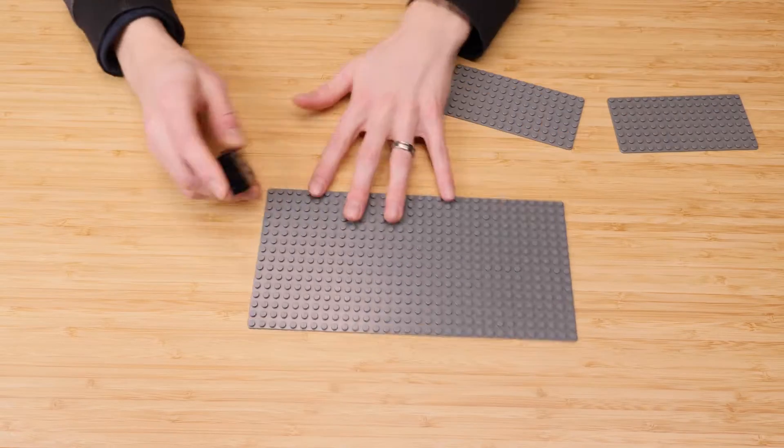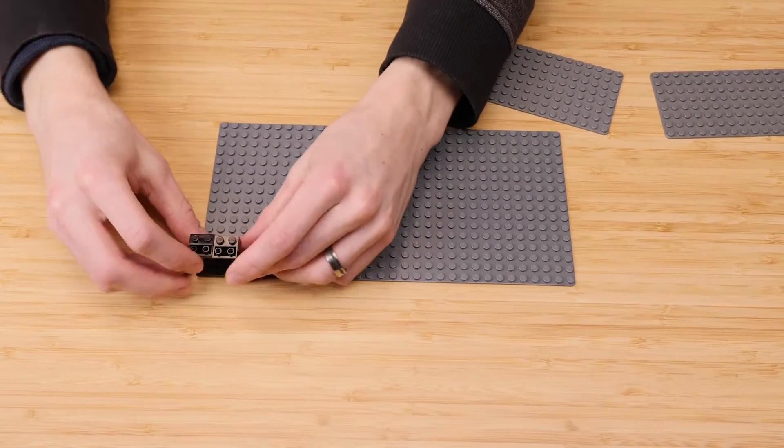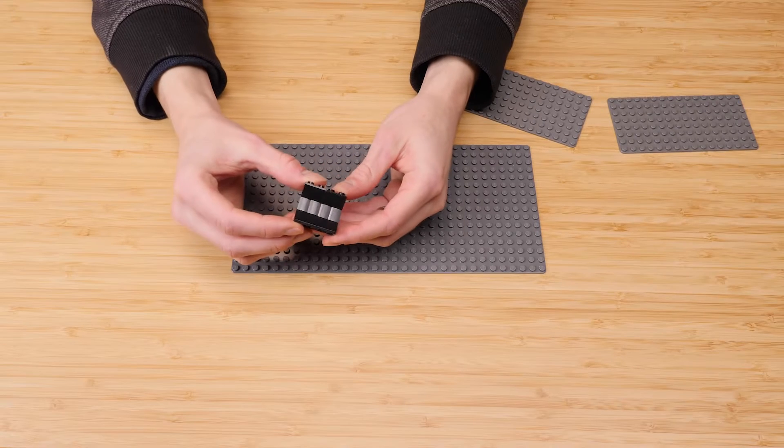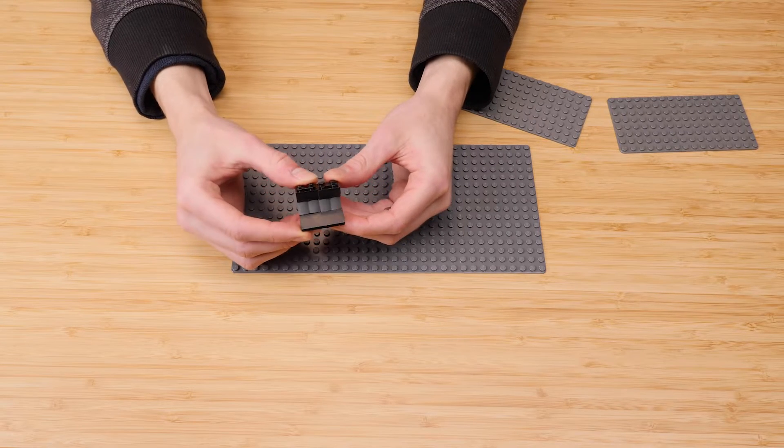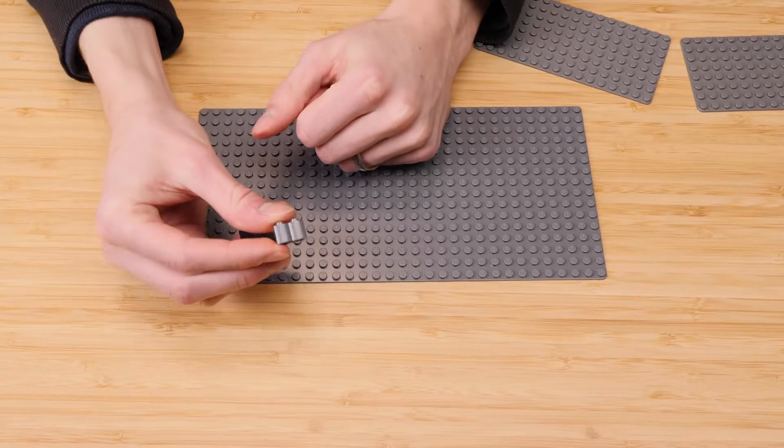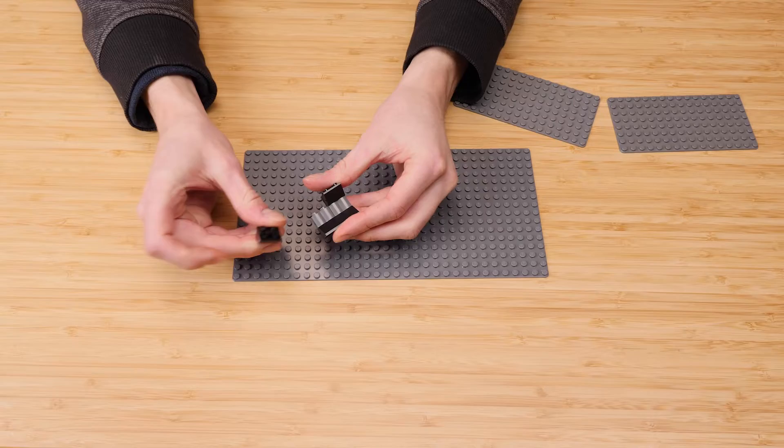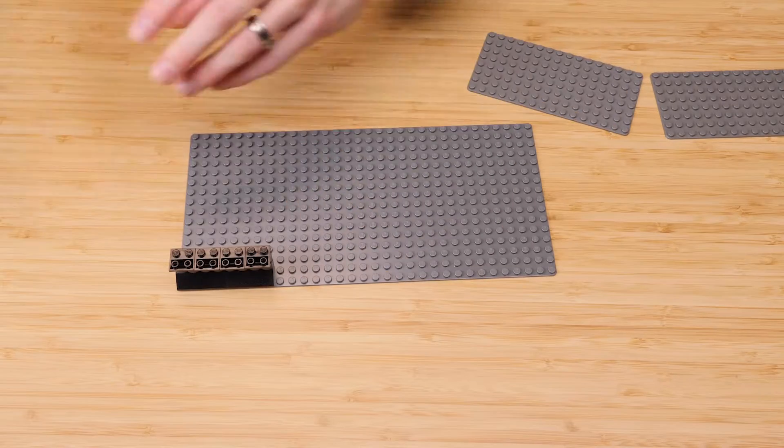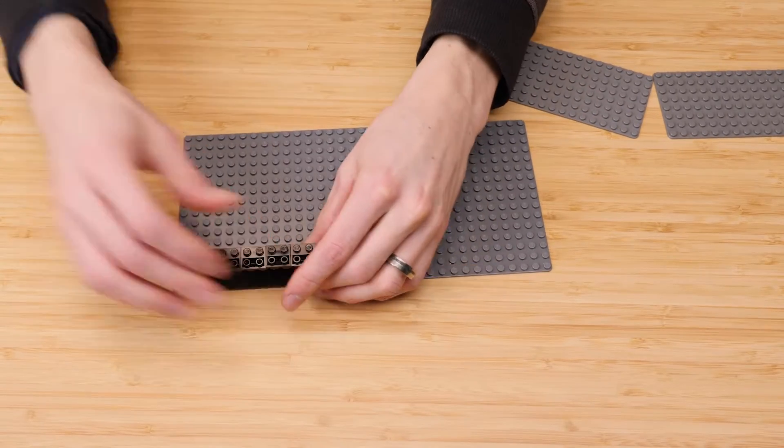So the first thing that I do with these stands is add a little detailing on the front. This is what I've come up with just because it's really cheap and easy. This here is just a 1x2 modified brick and then the inverted slope on top. So I just line the entire front section with this.